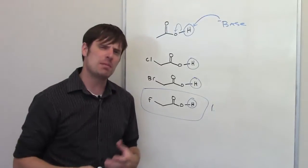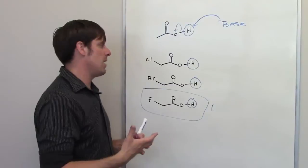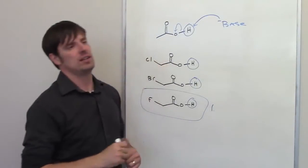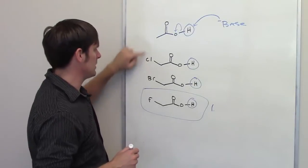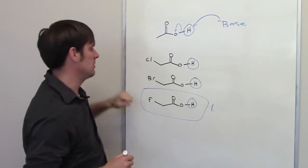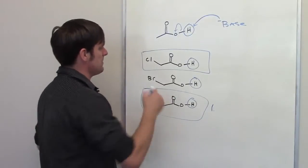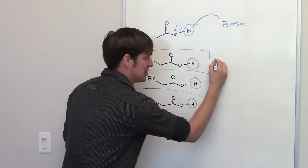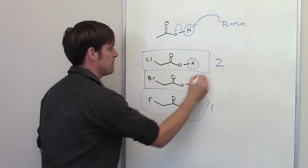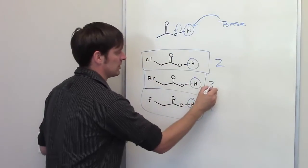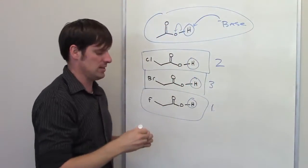Which of them is number two, the second most acidic? That's going to be the one bound to an atom that is the next most electronegative. Who's next most electronegative — a chlorine, a bromine, or just a bunch of hydrogens on that carbon? It is a chlorine. So this molecule is going to be number two, the second most acidic, followed by the one with the bromine on it, which is number three, and then this molecule right here which is acetic acid.